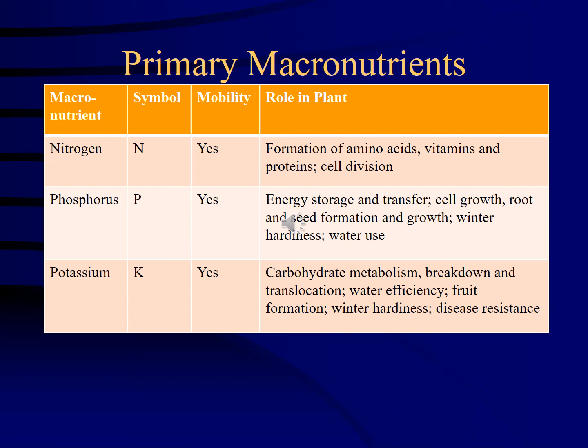It's similar to a pregnant woman whose body will take nutrients from her own tissues to give to the baby — nutrients go to the most critical place, which in a plant is the new leaves. So if a plant was nitrogen deficient, it would take nitrogen from its older leaves and move it to the new leaves. What you'd see as the plant caregiver is yellowing of the older leaves — yellowing older leaves specifically indicates nitrogen deficiency. If the nutrient was not mobile, you'd see yellowing of the younger leaves instead.